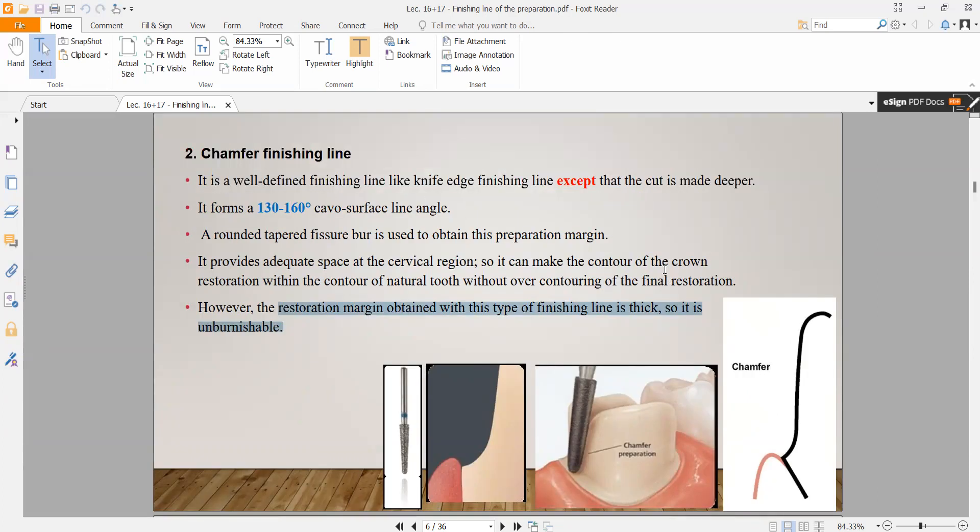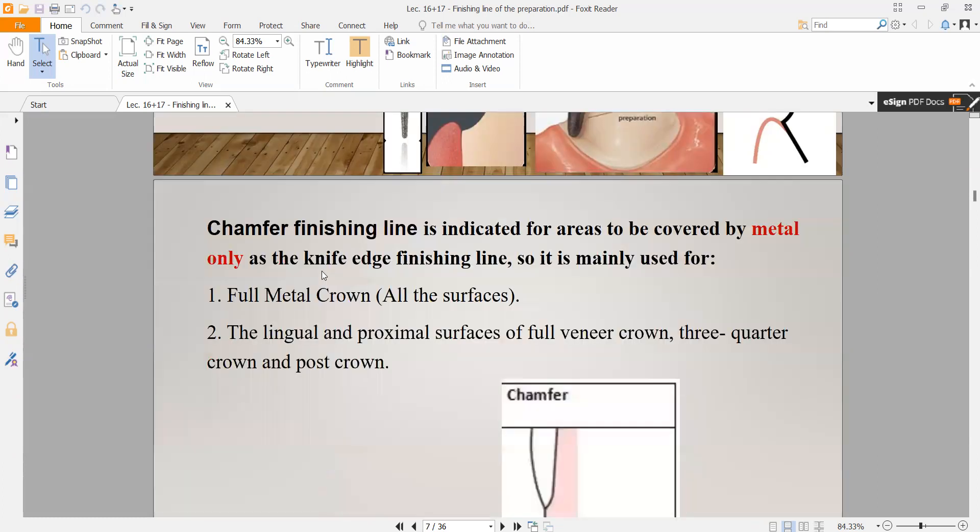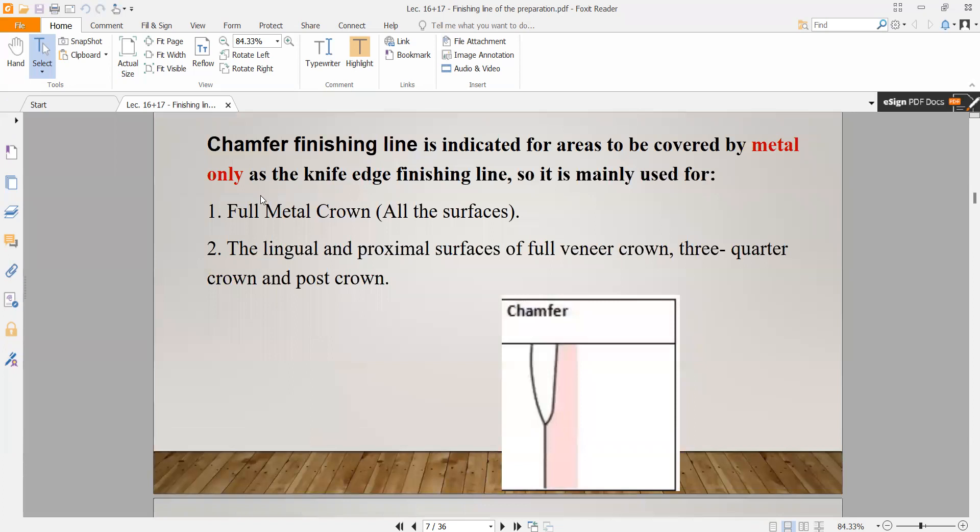I think because it provides more bulk. Since we took additional quantity from the tooth, we'll have additional bulk. I think this is why chamfer is better. In any case, the indications are exactly the same as knife edge: full metal crown, and also lingual and proximal surfaces of veneer crown, three-quarter crown, or post crown.